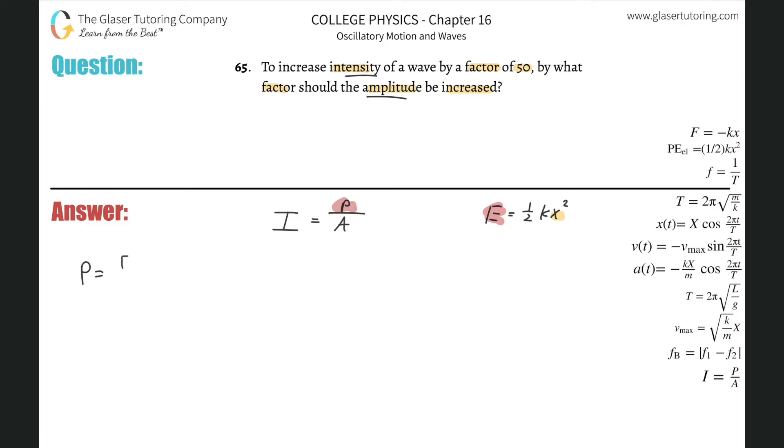Well, power is simply the energy per time, right? It's a watt, it's a joule per second. So what I can do here is in my power, in my intensity formula here, I can just substitute instead of writing power, I'm going to write the energy over time, right? And then that has to be multiplied by the area in the denominator.